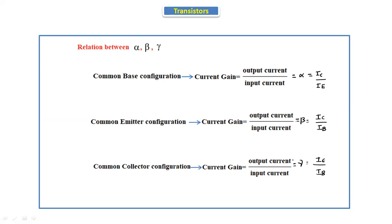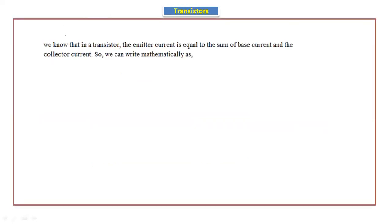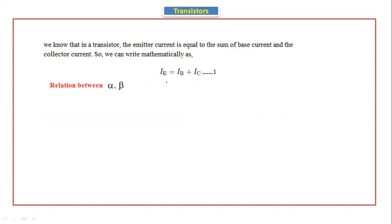Now let's see. We know that in the transistor, the emitter current is equal to the sum of the base current and the collector current. So we can write mathematically: emitter current is equal to base current plus collector current. This is equation number one. We know this equation already.